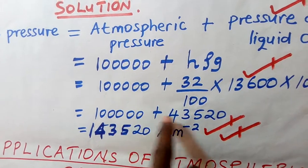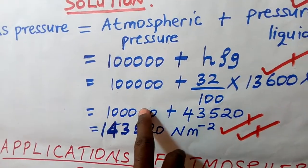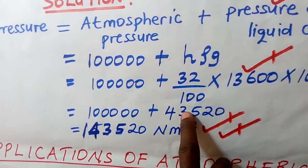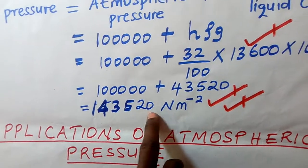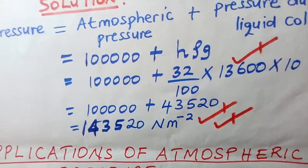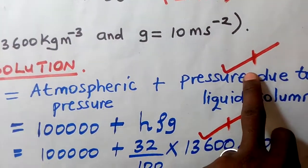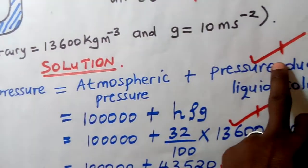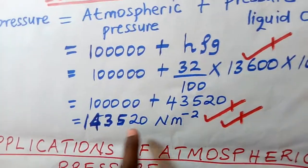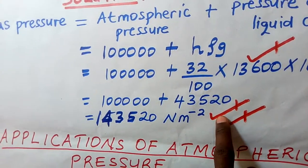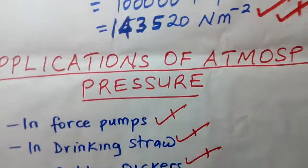Now both values are in newtons per meter squared, so we can add them. Adding gives 143,520 newtons per meter squared. This question was worth two marks: the first mark for writing the formula — pressure of a gas equals atmospheric pressure plus pressure due to the liquid column — and the remaining marks for correct substitution, correct answer, and correct unit.